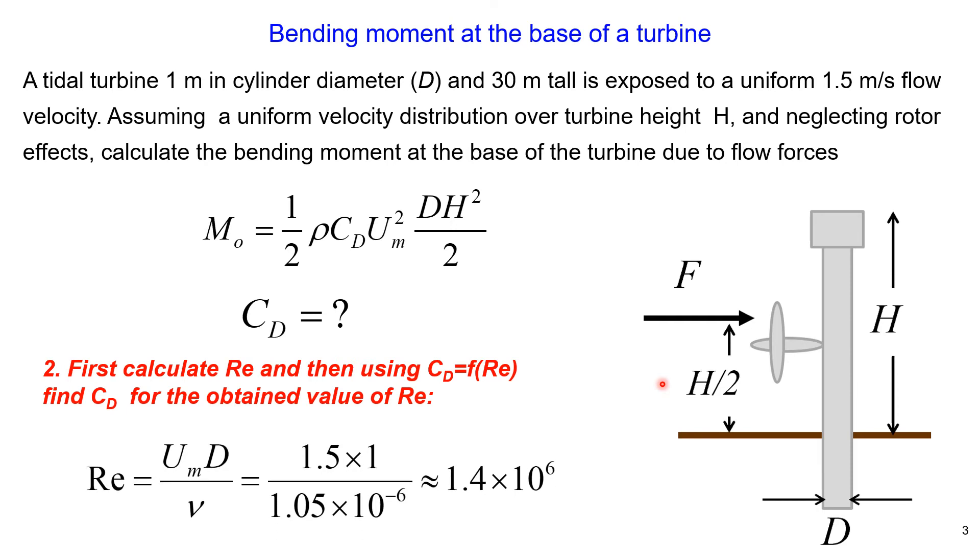We calculate the Reynolds number using flow velocity, diameter, and kinematic viscosity. All data are given in the problem. Reynolds number equals approximately 1.4 multiplied by 10 power 6. Now we can use the diagram to obtain the drag coefficient value.